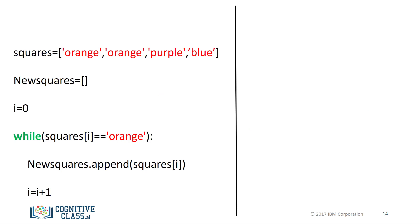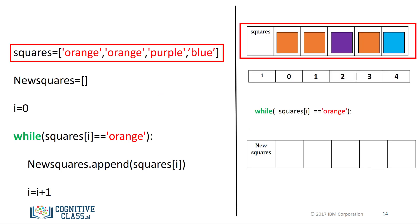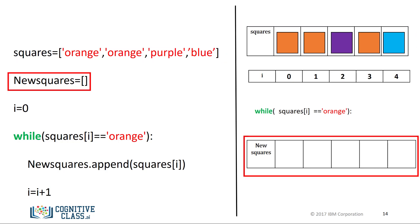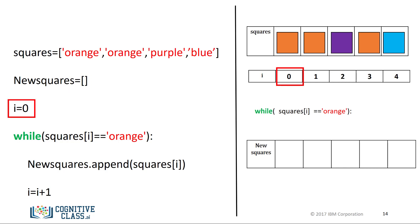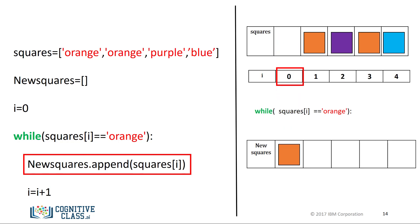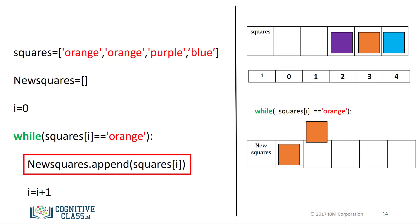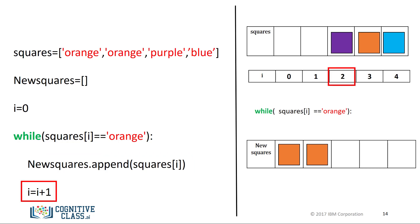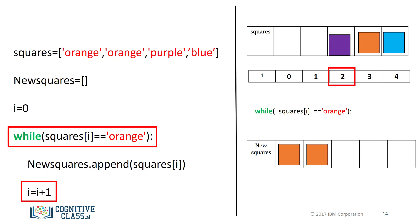Let's use the figure on the left to represent the code. We use a list with the names of the colors to represent the different squares, and create an empty list of new squares. We start the index at zero. The while statement repeatedly executes the statements within the indent until the condition is false. We append the first element to new squares and increase i by one, then append the second element and increment i. When the value in squares is purple, the condition is false and we exit the loop. Check out the labs for more examples of loops, many with real data.